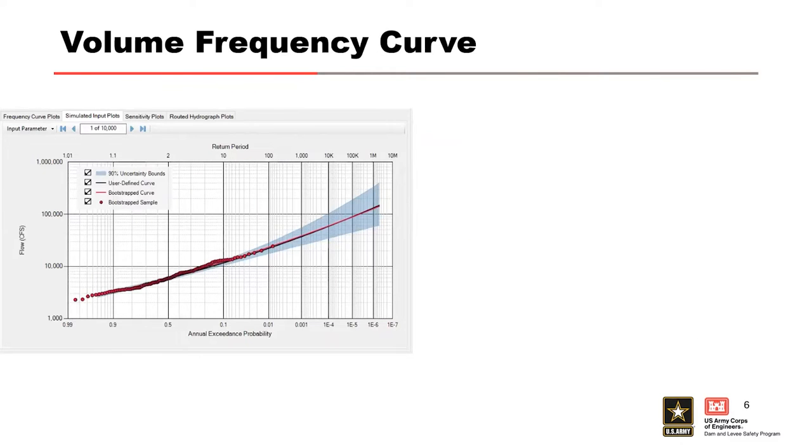The first simulated input plot type we will examine is, of course, the volume frequency curve. When you select the volume frequency curve simulated input plots, you can examine all 10,000 volume frequency curves developed in the outer loop of the RFA stochastic simulation. In this plot, you can see the first volume frequency curve generated in this simulation. The user-defined volume curve is shown in black, and the sampled one with its dots are shown in red. You can't really see the user-defined one because the first sample is basically right on top of the user-defined.